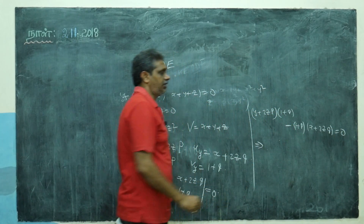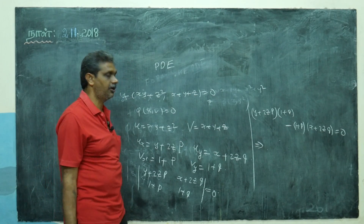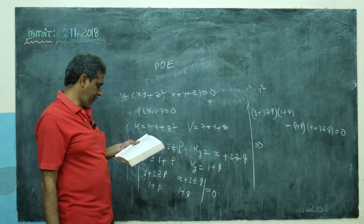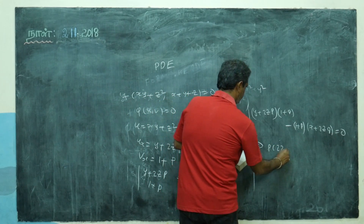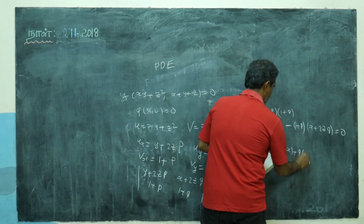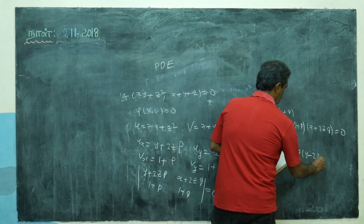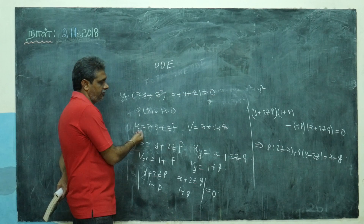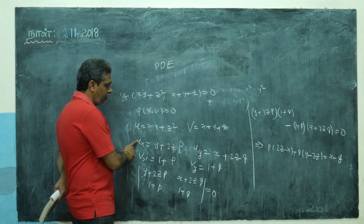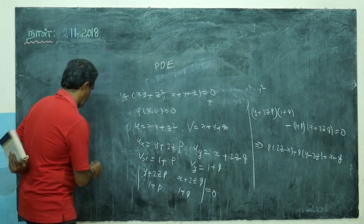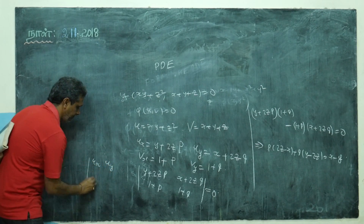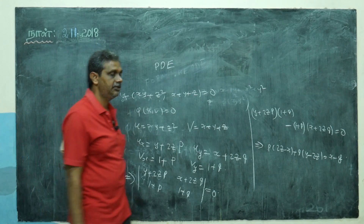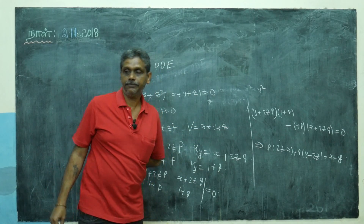Solving the determinant — remember p into something, q into something, and remaining terms — after expanding and simplifying: −(1 + p)(x + 2zq) + (1 + q)(y + 2zp) = 0. After simplifying, what we get is: p(2z − x) + q(y − 2z) = x − y. So the PDE is found. The method: given φ(u, v) = 0 where u, v are functions of x, y, z, find the Jacobian determinant of u_x, u_y, v_x, v_y equal to zero — that is the way of doing it.